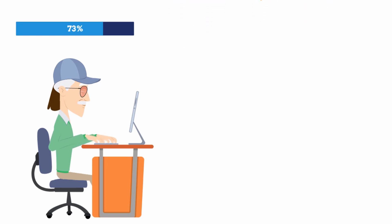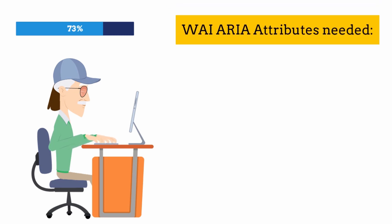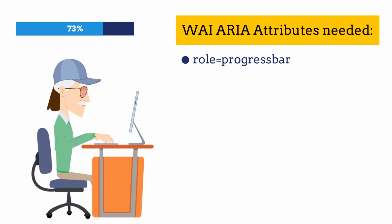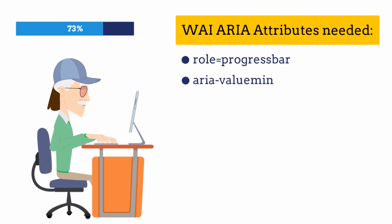The following ARIA attributes should be used to make the progress bar web accessible. First, role equals progressbar — remember, progress bar is always read-only and the user cannot alter its value. When we add role progressbar, it adds an implicit aria-readonly value of true. Next, aria-valuemin: the minimum value that the progress bar can have.